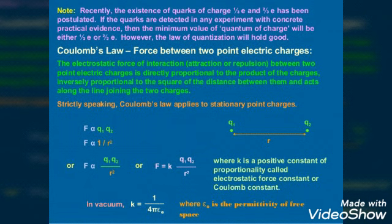So the formula becomes F = (1/4πε₀)(q1q2/r²), where ε₀ is called the permittivity of free space.